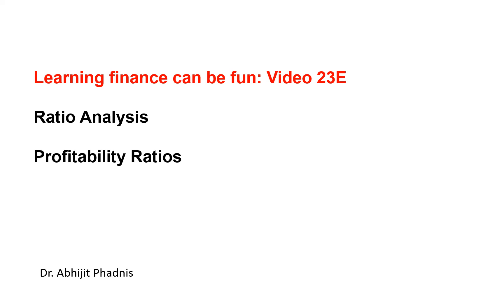Welcome to video 23. We have been discussing different types of ratios and in this video I am going to focus on profitability. Profit is the major driver for any business enterprise, but the absolute amount of profit is not sufficient to make an assessment of whether the organization is doing well or not. We need to look at profit margin — that is, compare profit in relation to the amount of sales. Profitability ratios focus exactly on that.